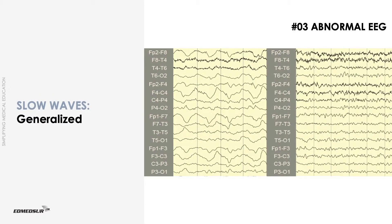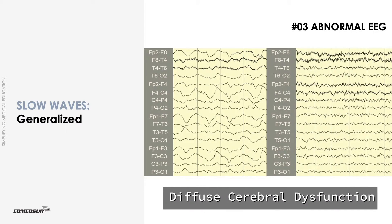Generalized slow waves have a frequency of less than 8 Hz and appear simultaneously in corresponding parts of the two hemispheres. Generalized background slowing indicates diffuse cerebral dysfunction, but does not identify the cause.